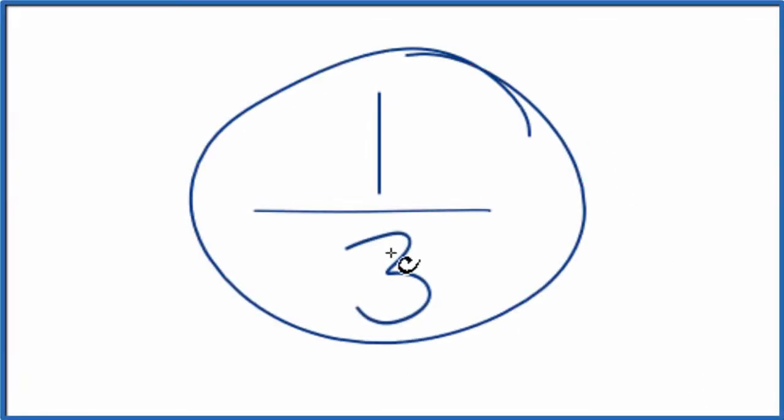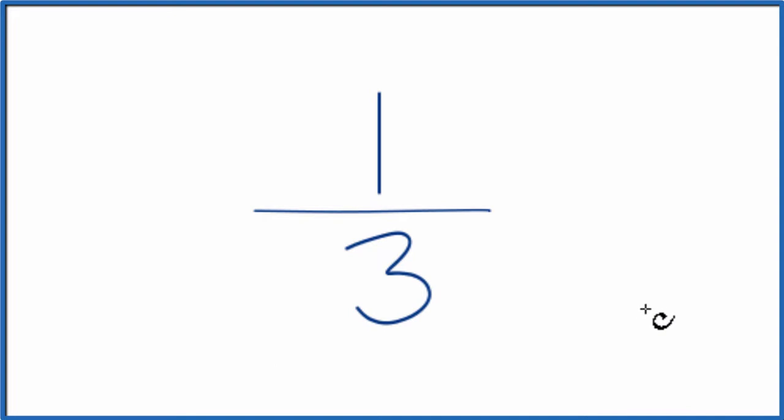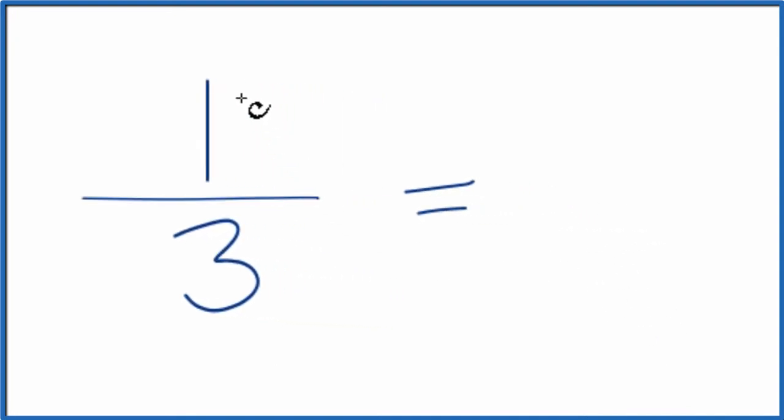Let's simplify the fraction one-third, and here's how we can do that. We want to find another fraction that's equivalent. It has the same value as one over three. It's just that we've simplified or reduced it down to lowest terms.